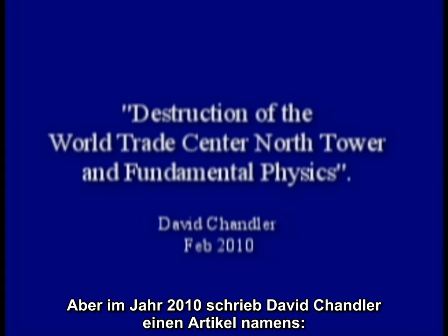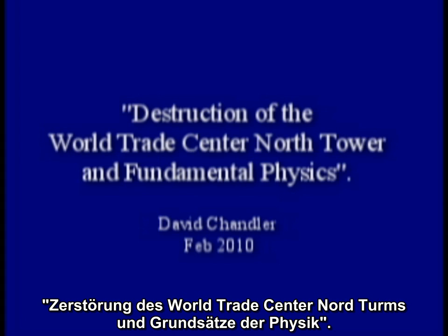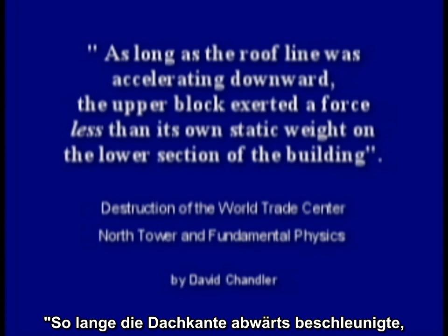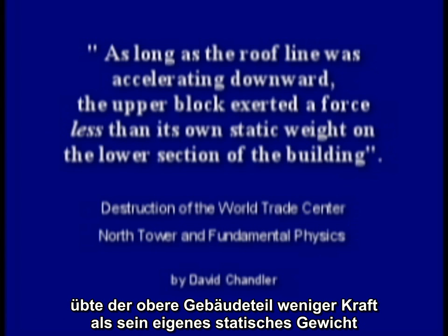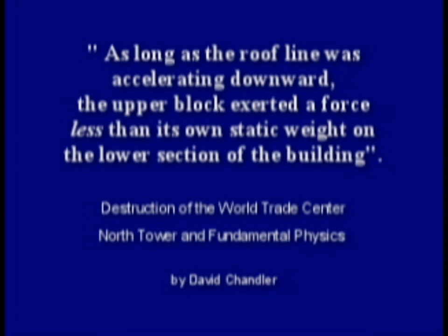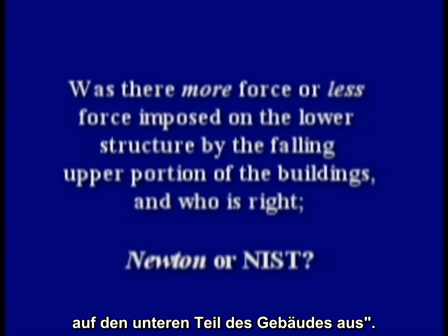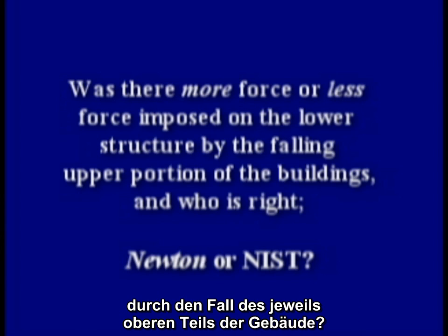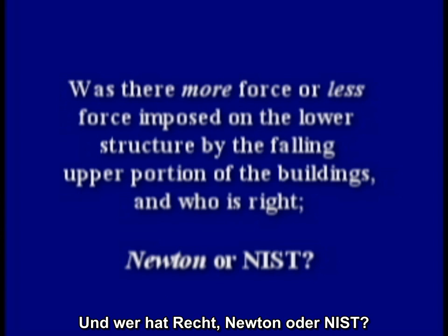But in 2010, David Chandler wrote a paper called 'Destruction of the World Trade Center North Tower and Fundamental Physics.' Citing Newton's laws, he concluded: 'As long as the roof line was accelerating downward, the upper block exerted a force less than its own static weight on the lower section of the building.' So was there more force or less force imposed on the lower structure by the falling upper portion of the buildings? And who is right — Newton or NIST?